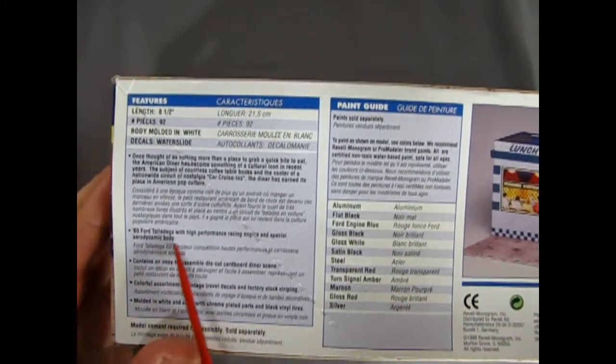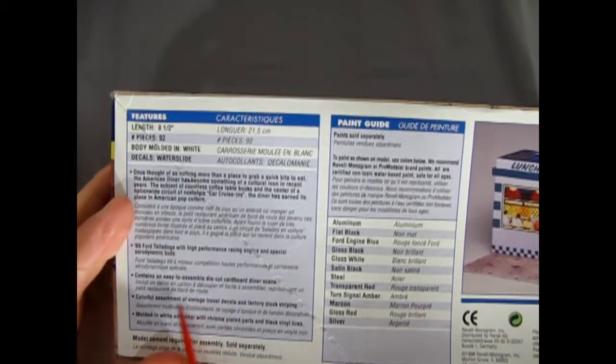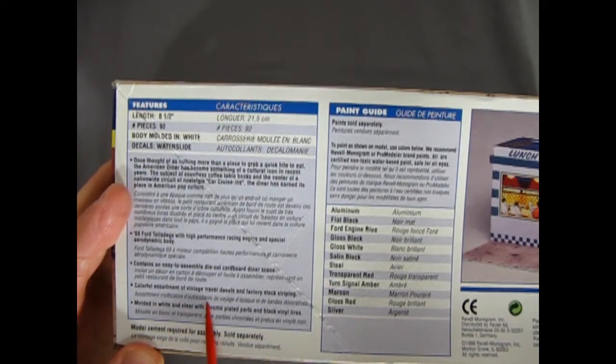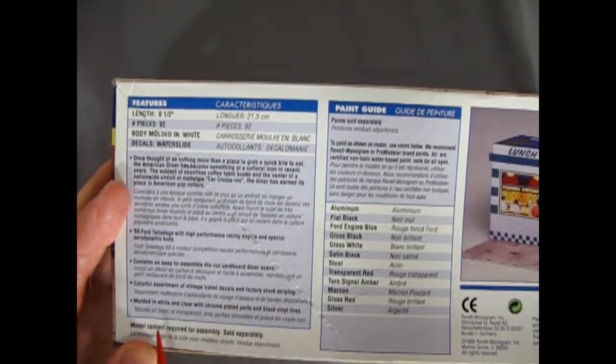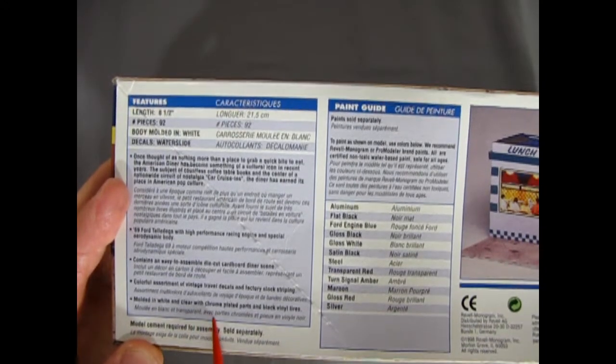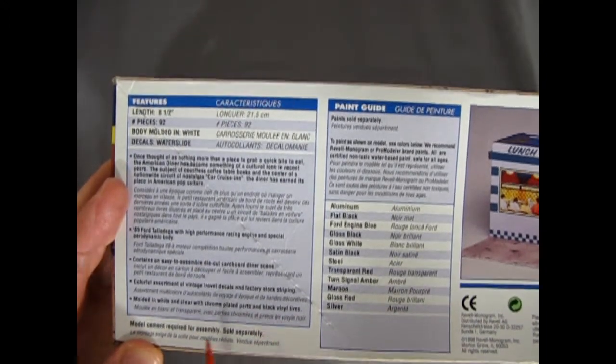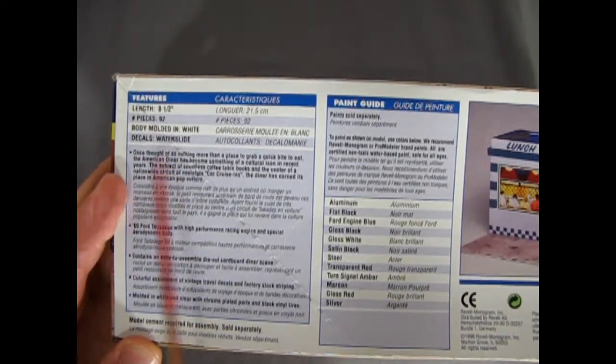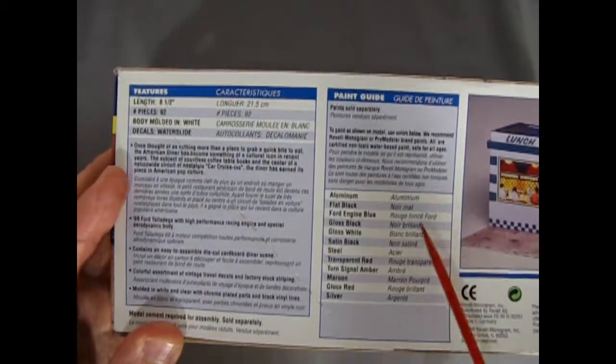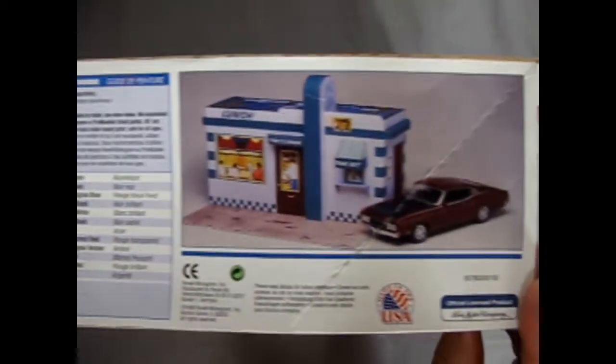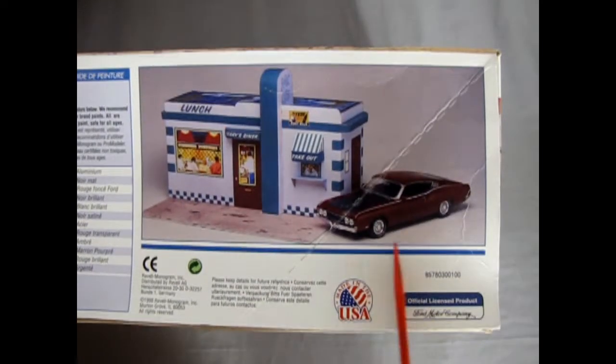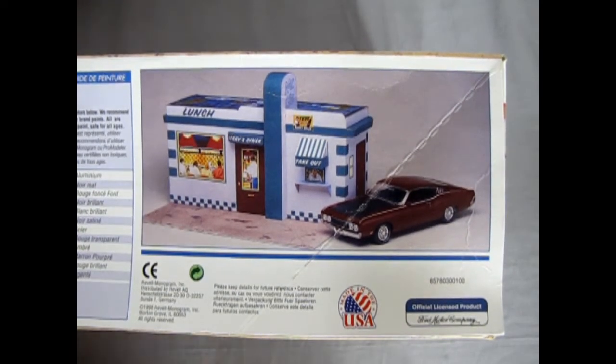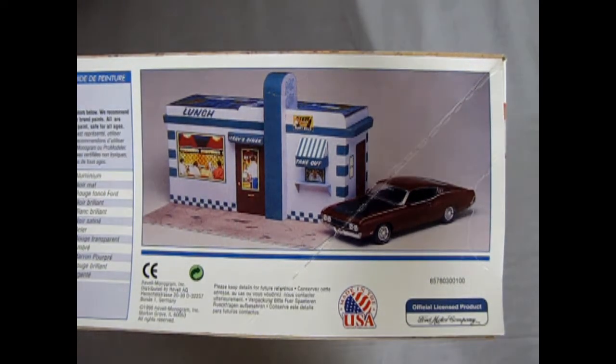69 Ford Talladega contains an easy assembled die cut cardboard diner scene, colorful assortment of vintage travel decals and factory stock striping which is always cool. Molded in white and clear with chrome and plated parts and black vinyl tires. The car itself is eight and a half inches long which is huge, 92 pieces. Here's a side view of the model and the car and I met the guy that built this online, the original builder.